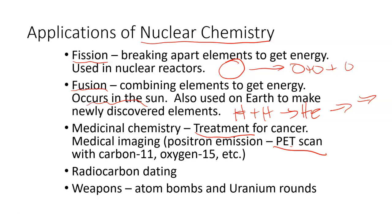There's also radiocarbon dating, which looks at how much of a particular isotope is left over to determine how long ago an organism died. This is based on carbon-14. Carbon-14 gets into your body while you're alive, but once you die you're no longer acquiring more of it and it starts to decay. We can then look at how much carbon-14 is left to tell how old something is — how long ago it died.